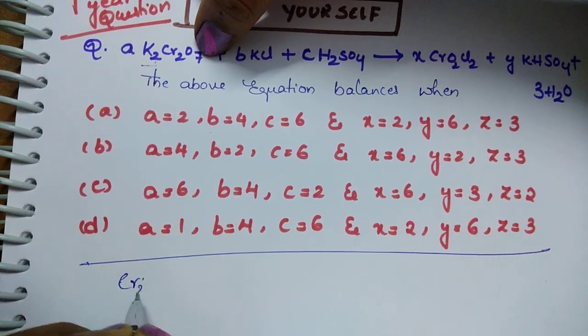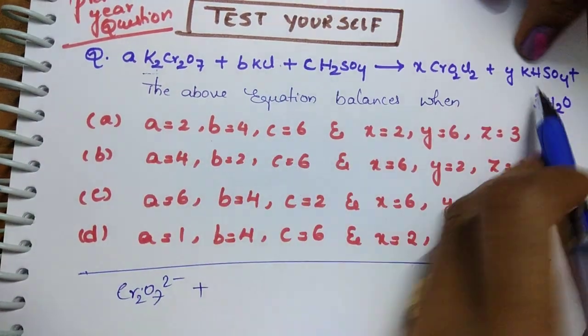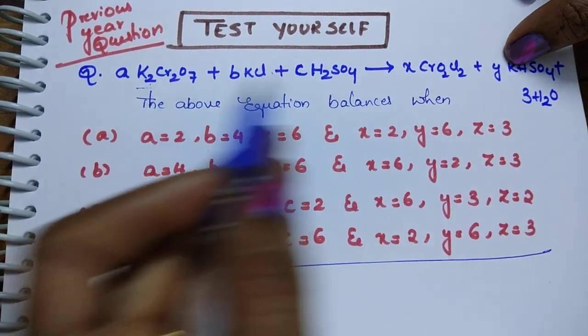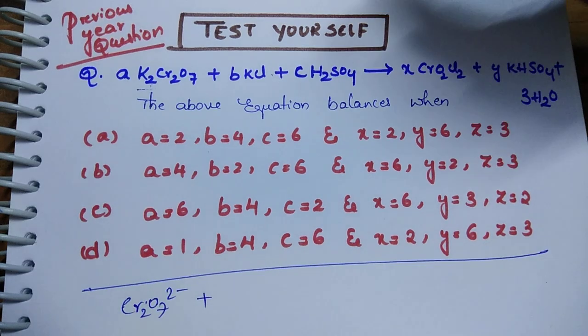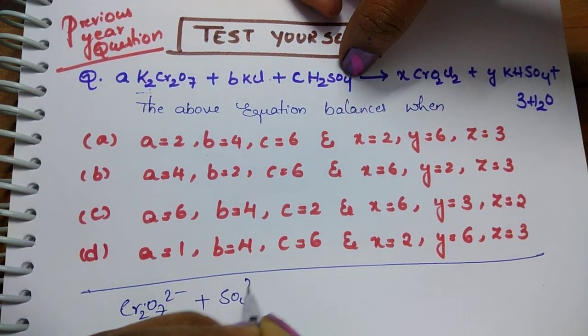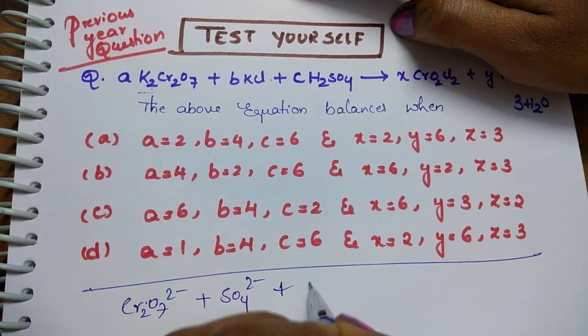K2Cr2O7 will be Cr2O7^2- plus here K^+ Cl^- these are common. K^+ and Cl^- ions are there, they are common so no need to take. And H2SO4 converts into SO4^2-, and this reaction is taking place in H2SO4.